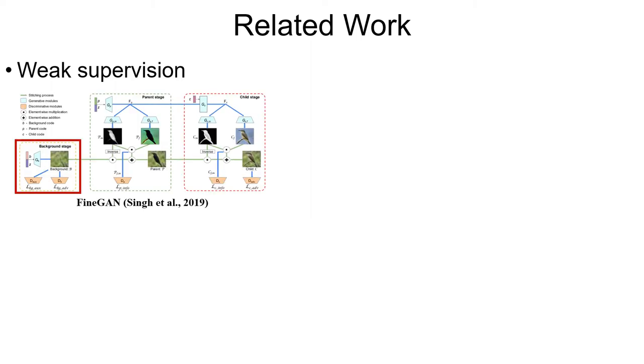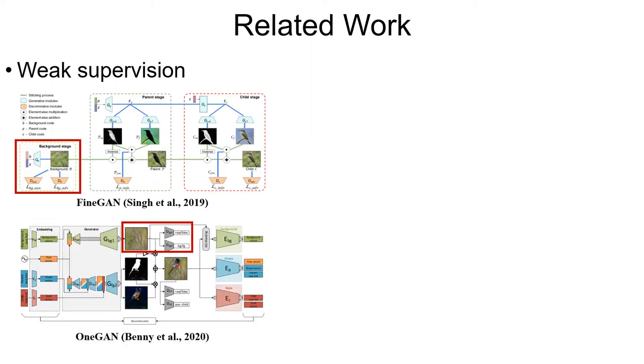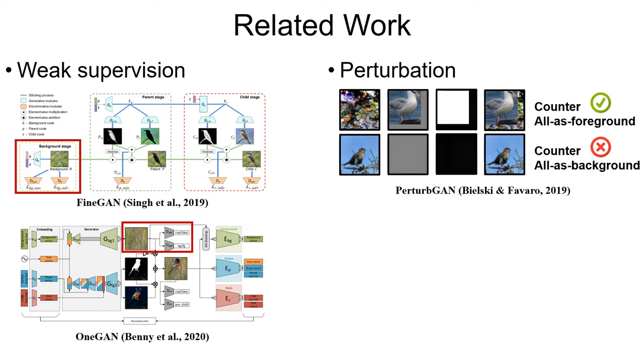Related works counter these trivial solutions by utilizing weak supervision. For example, FineGAN and OneGAN introduce an extra background discriminator with the help of bounding box annotations. Another work, PerturbGAN, introduces perturbation into the composition step, which can only counter all-as-foreground but cannot counter all-as-background.